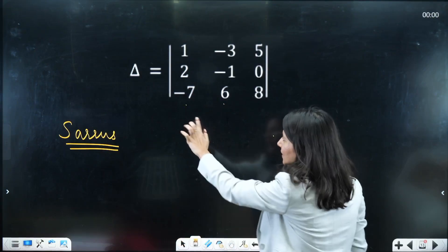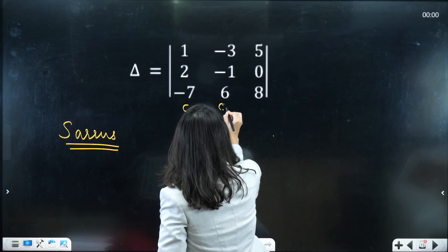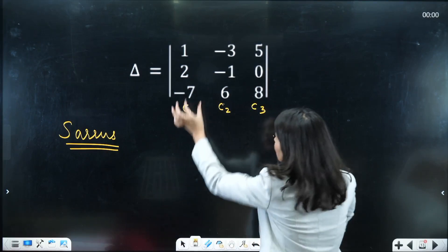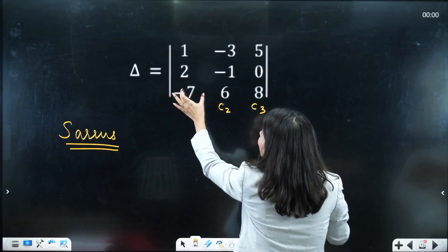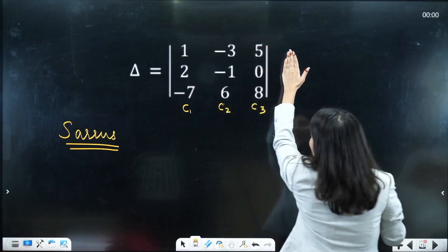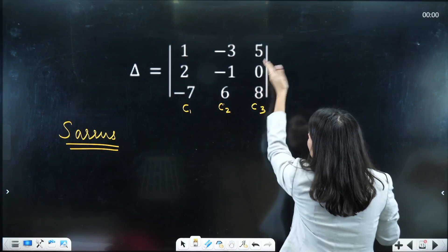Let me show you. So this is your column number 1, column number 2 and column number 3. So this column 1 you have to rewrite, copy paste just here, right after this column number 3.